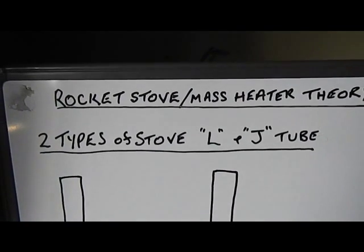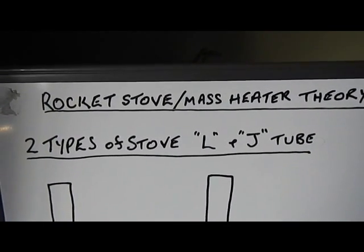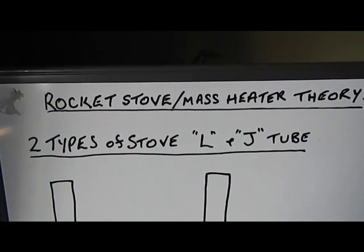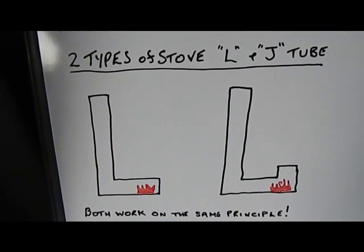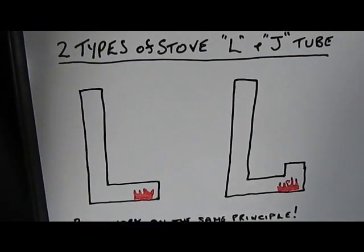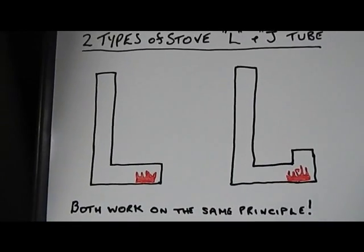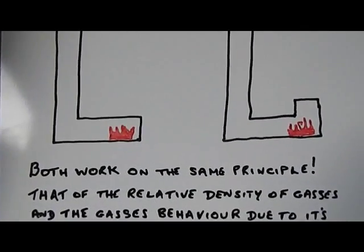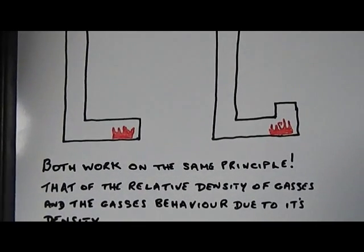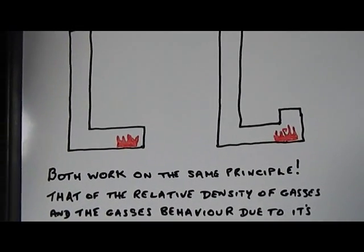There are two types of stove that I've noticed. There's an L and a J tube. And here we have my representation of the L and the J tube. They both work on the same principle, that of the relative density of gases and the gases behavior due to its density.